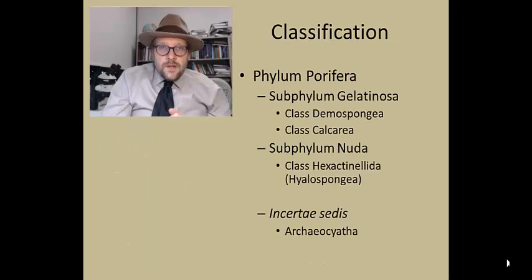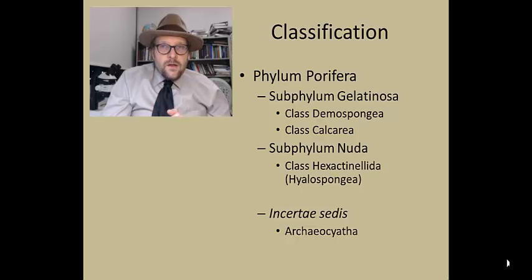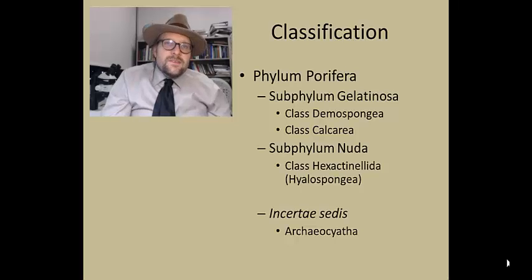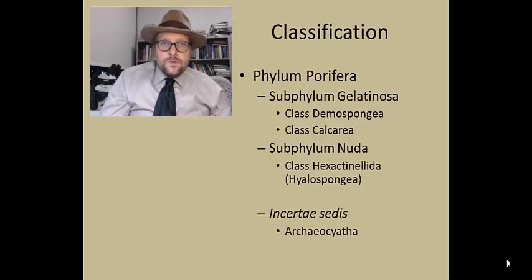The subphylum Gelatinosa contains two classes of sponges: the Demospongia and the Calcarea, while the subphylum Nuda includes the Hexactinellida, or glass sponges. The extinct Archaeocyathida — ancient cups — are placed tentatively in their own group, not close to either Gelatinosa or Nuda.